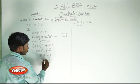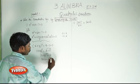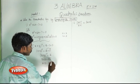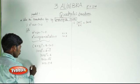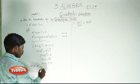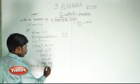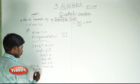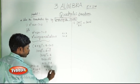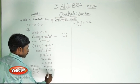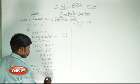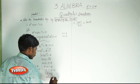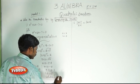Now x plus 3 is equal to plus or minus root of 16, which is 4. Case 1: x plus 3 is equal to plus 4, and Case 2: x plus 3 is equal to minus 4. Then x is equal to 4 minus 3, so x is equal to 1, and x is equal to minus 4 minus 3, so x is equal to minus 7. Therefore, the solution set is {minus 7, 1}.